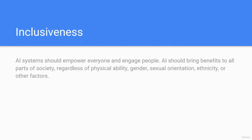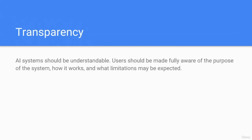Inclusiveness: AI systems should empower everyone and engage people. AI should bring benefits to all parts of society regardless of physical ability, gender, sexual orientation, ethnicity, or other factors. Transparency: AI systems should be understandable. Users should be made fully aware of the purpose of the system, how it works, and what limitations may be expected.